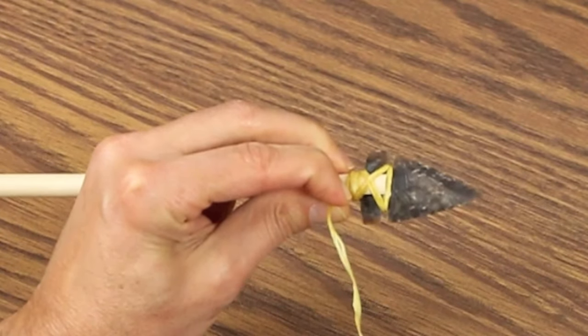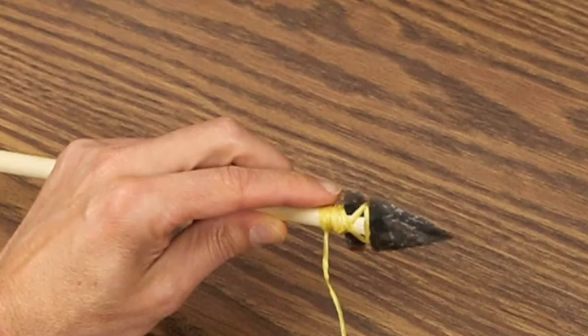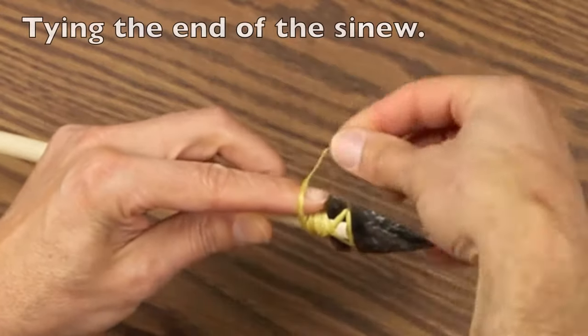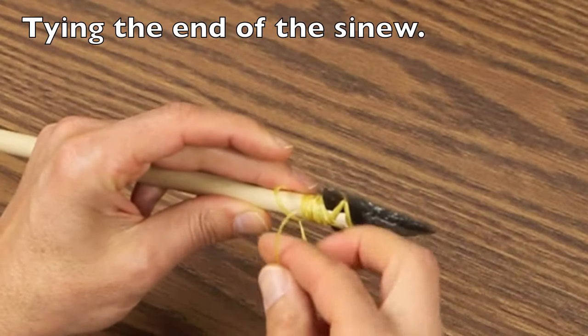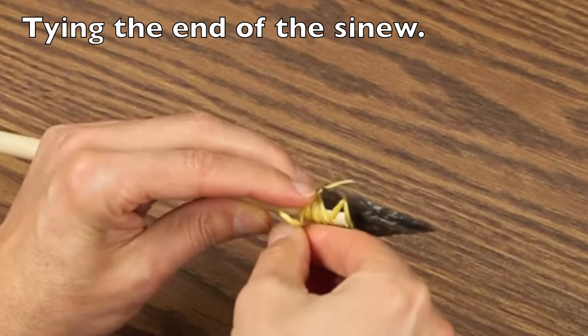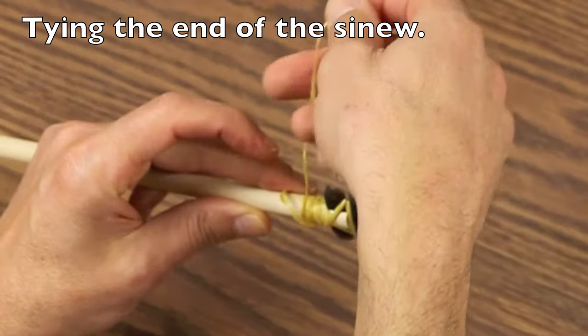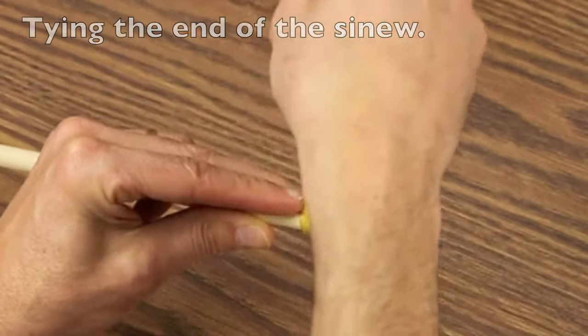At this point, you're left with a tail of a few inches of sinew, and you'll tie that off by wrapping it around the shaft. Place your finger against the shaft, take the sinew around the back creating a loop. Remove your finger, feed the end of the sinew through that loop, and pull it tight.